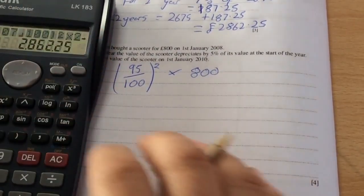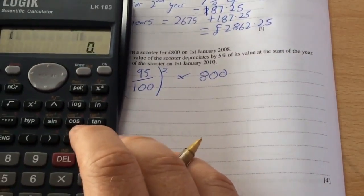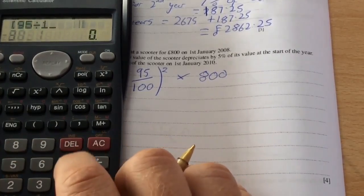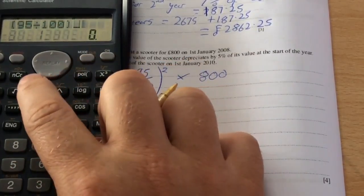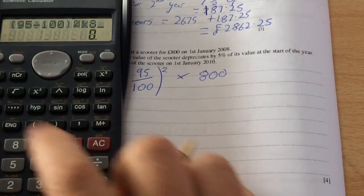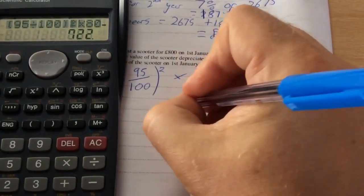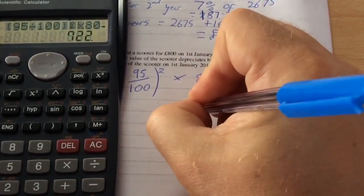So if I was working this one out, open bracket, 95 divided by 100 to the power of 2 times £800. And the scooter is worth £722.